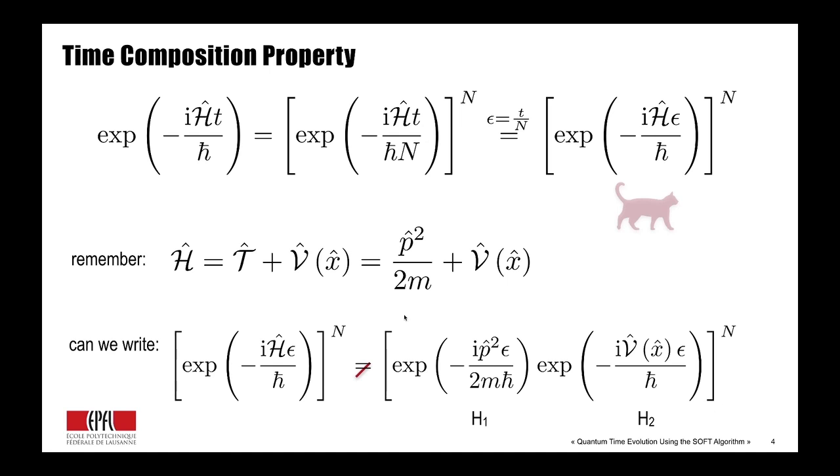The second thing you might ask: OK, I know my Hamiltonian looks like this, so I have a kinetic part, a potential part. Might I be able to just write this propagator as a product of two propagators, so one for the kinetic part and one for the potential part? And this still isn't true and helpful, because we don't know if this is really a true rewriting because, in general, the quantum mechanics operators don't commute, so it plays a role in which order we apply them.